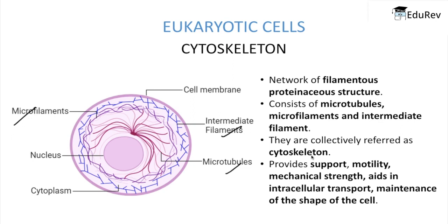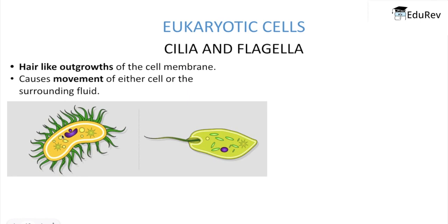The function of the cytoskeleton is to provide support, motility, and mechanical strength. It also aids in the intercellular transport of fluids and in maintenance of the shape of the cell. Cilia and flagella are hair-like outgrowths of the cell membrane and are responsible for the movement of either the cell or their surrounding fluids.